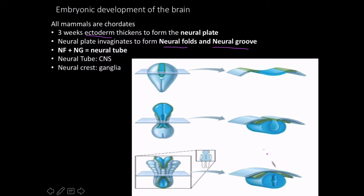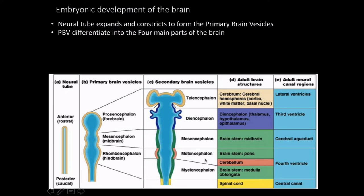The folds and groove eventually connect to form the tube, and that neural tube is what forms our central nervous system. The stuff in green is known as the neural crest — this is what becomes the ganglia of your peripheral nervous system. This little structure here is what ultimately develops into your nervous system.